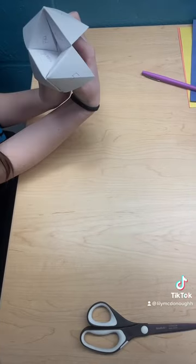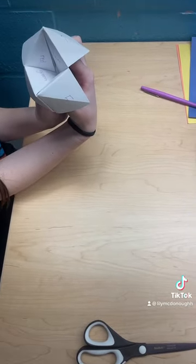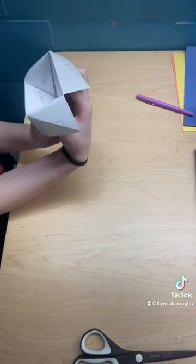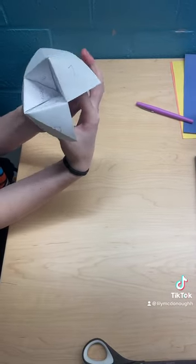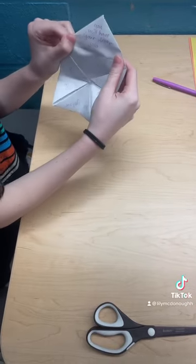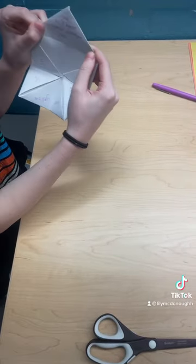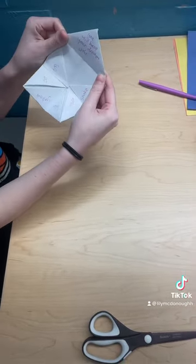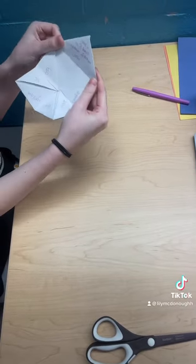Now we have different colors. Let's choose the color red. This is where we pick our fortune. Red is right here. We're going to open the flap that says red and it says you will have your dream job. That is how you tell someone's fortune. It looks like I will have my dream job.